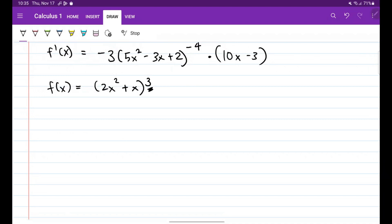So this is f prime of x. Bababa natin, so 3 times 2x squared plus x, tas bababa natin isa, squared. Okay, times derivative nung nasa loob naman. So this will become 4x plus 1.